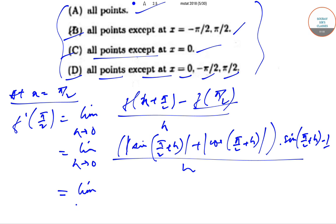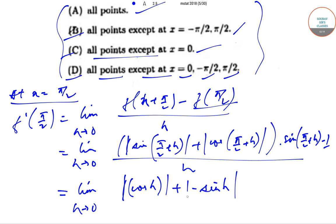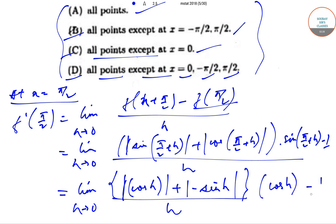Taking the limit as h tends to 0: sin(π/2 + h) is in the second quadrant, which equals cos(h), and since sin is positive there, we get |cos(h)|. And cos(π/2 + h) equals -sin(h), so |cos(π/2 + h)| = |−sin h| = sin h. So the expression becomes [cos(h) + (-sin h)] / h, giving cos(h) - 1 in the numerator context.